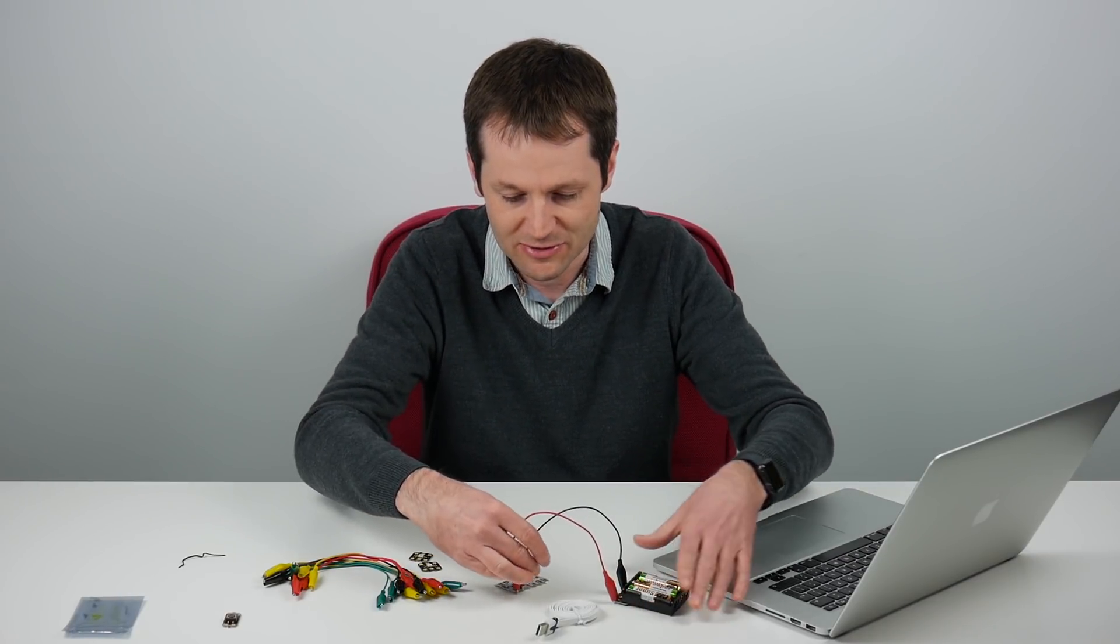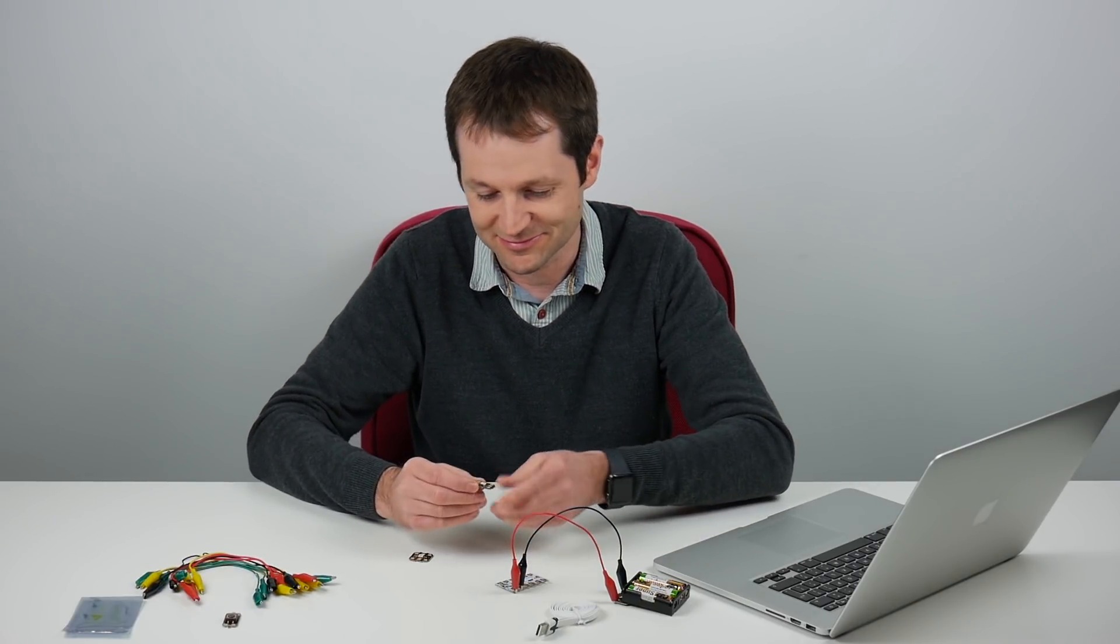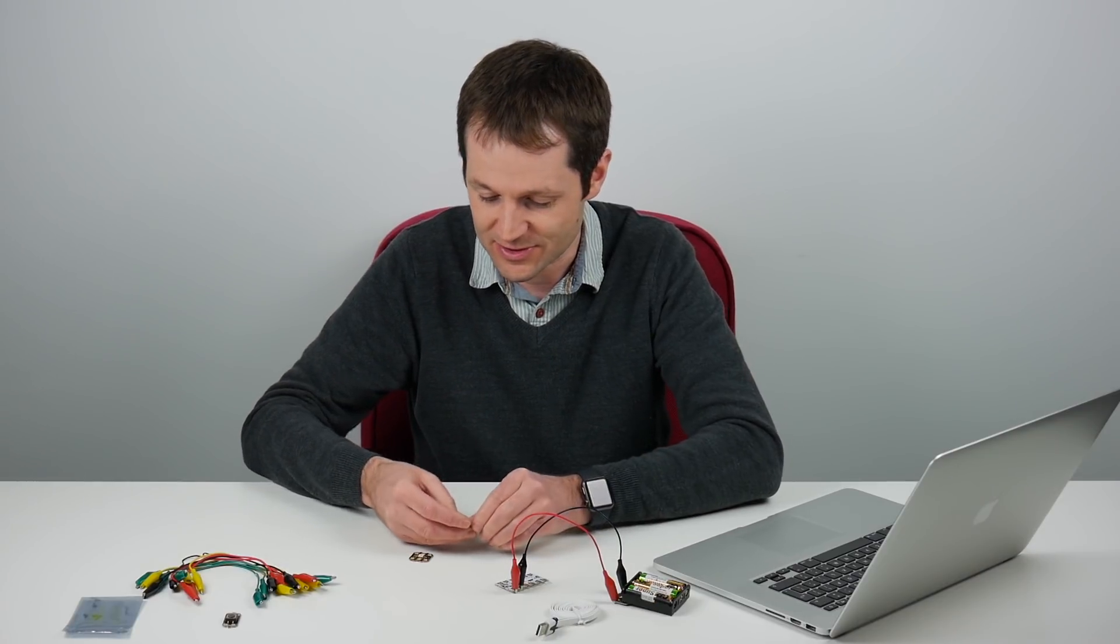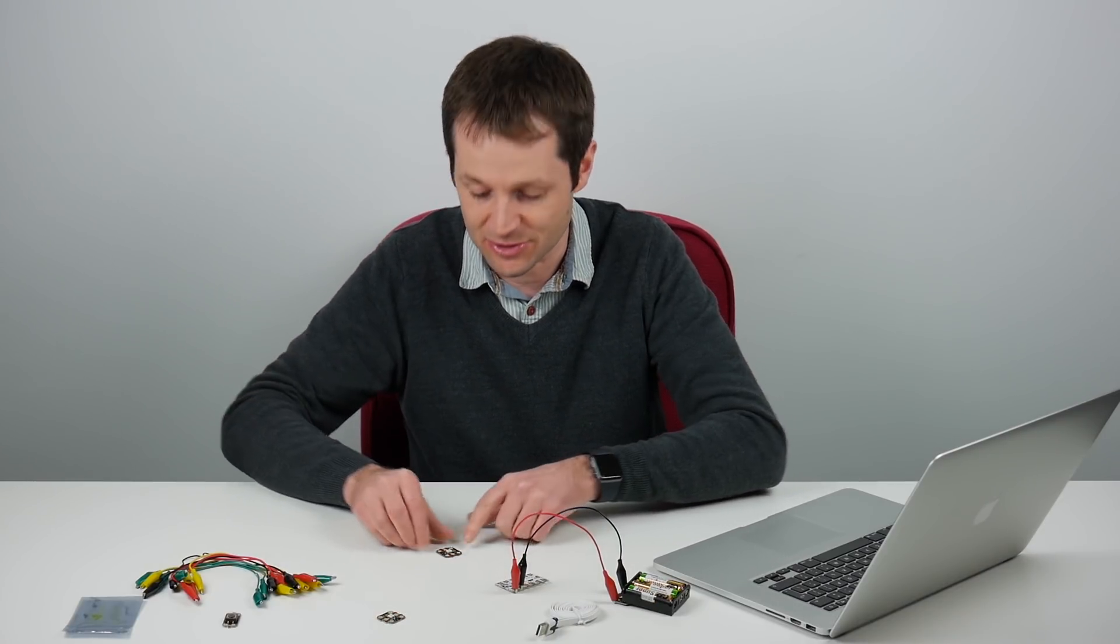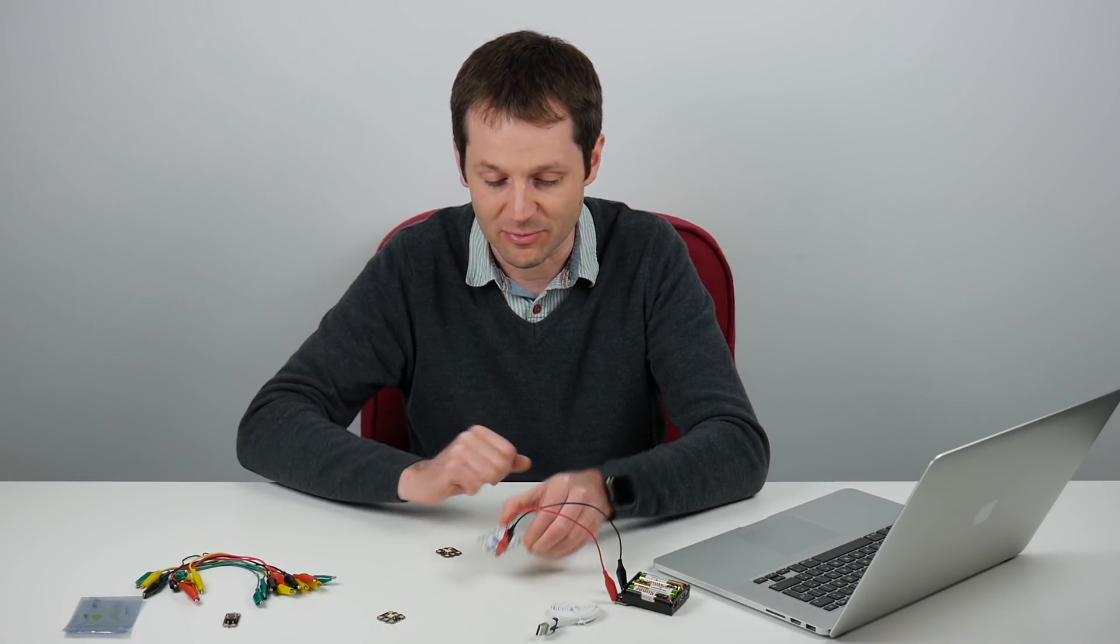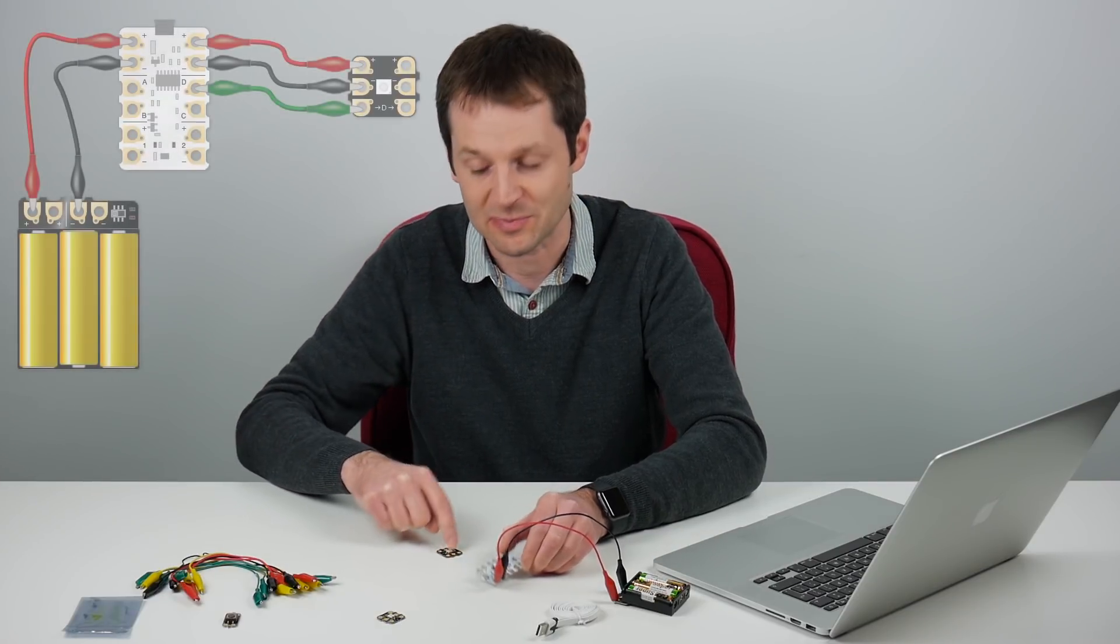Once I've connected my battery pack to the Crumble, I'm going to connect a sparkle to the Crumble. Sparkles need power too so I'm going to connect plus and minus from the sparkle to plus and minus on the Crumble. The power from the battery pack will go through the Crumble, power the Crumble, and then come out and power the Sparkle as well.